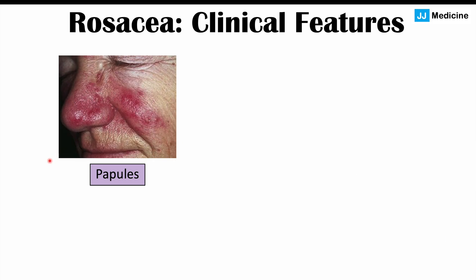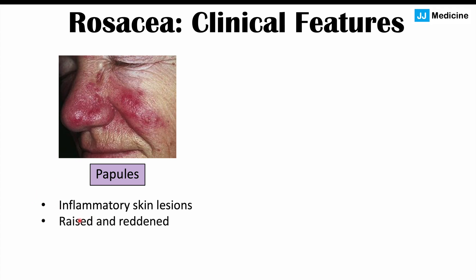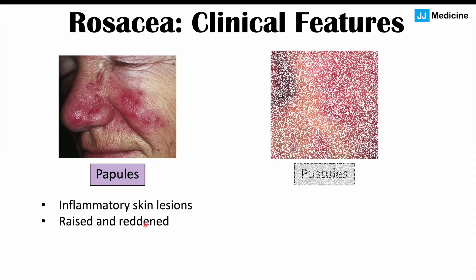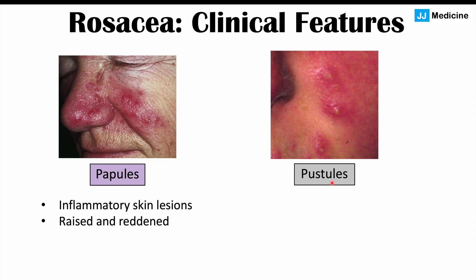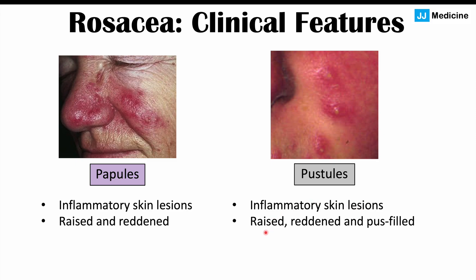We can also see issues with papules — inflammatory skin lesions that are raised and reddened, less than 10 millimeters in diameter. We can also see pustules in rosacea patients. Pustules are similarly raised and reddened inflammatory lesions, but they are pus-filled. You can see these little white areas showing that these skin lesions are pus-filled.